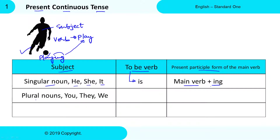I will write enough examples to help you understand this concept and it is very simple. Whenever we have plural nouns or pronouns like you, they, and we, then we need to use 'are' after the Subject. Here 'are' is the to-be Verb. After 'are,' we need to write the Present Participle Form of the Main Verb, which you can do by adding -ing to the Main Verb.